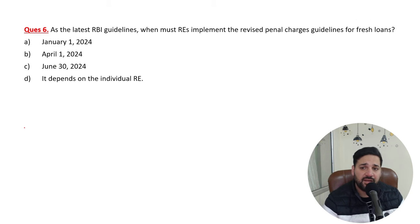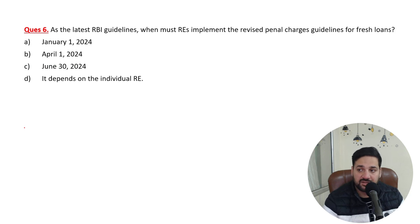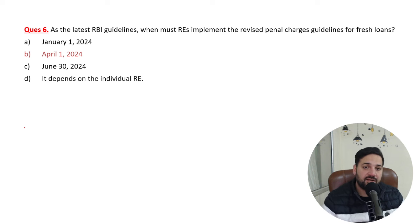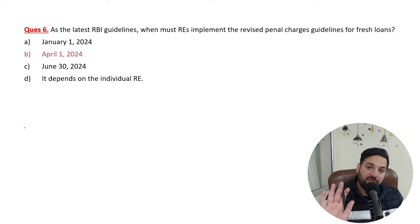When must registered entities implement the revised penal charges guidelines? For fresh loans, the revised penal charges guidelines must be implemented from the 1st of April 2024. Any fresh loan disbursed from that date must follow RBI's penal charges guidelines.